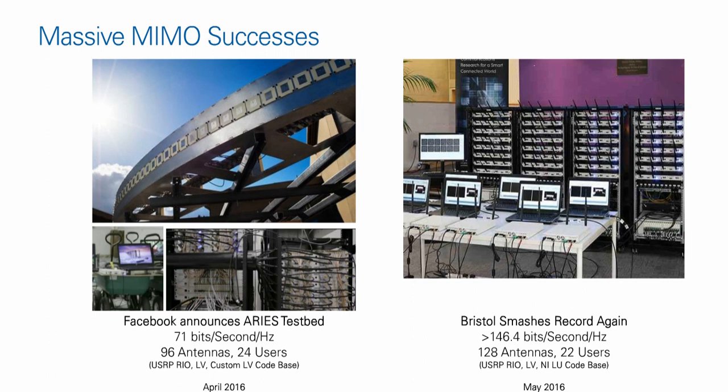Facebook also has a very keen interest in spectral efficiency. As Facebook enters this area, they will have to compete for spectrum with the existing incumbent mobile providers. Massive MIMO often operates around 100 antennas per transmitter or receiver base station, and it's typically implemented at the base station because it requires a lot of processing and raw power. The Facebook Aries system uses 96 antennas and can service 24 users.